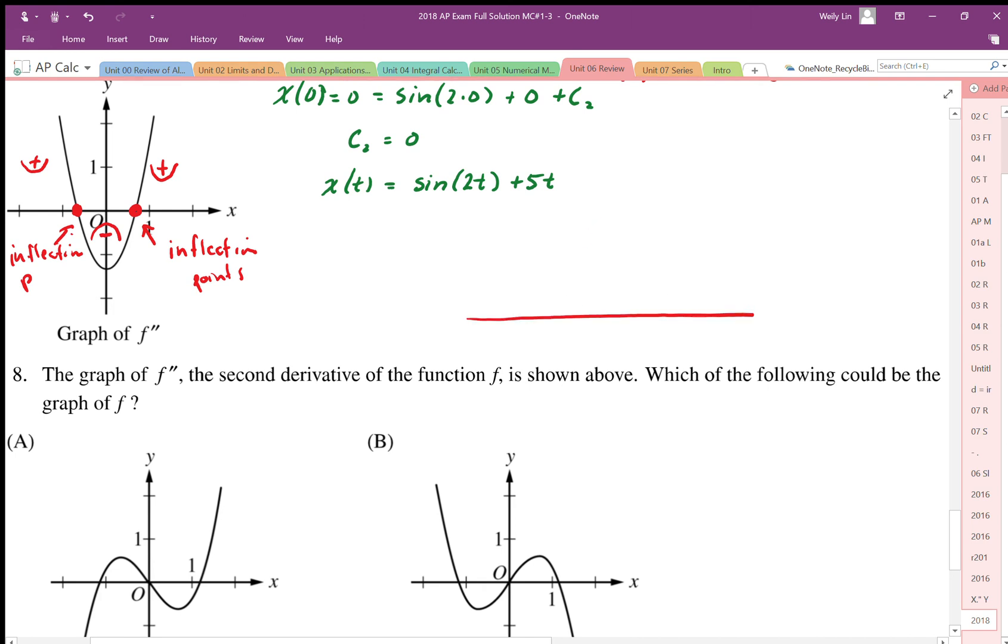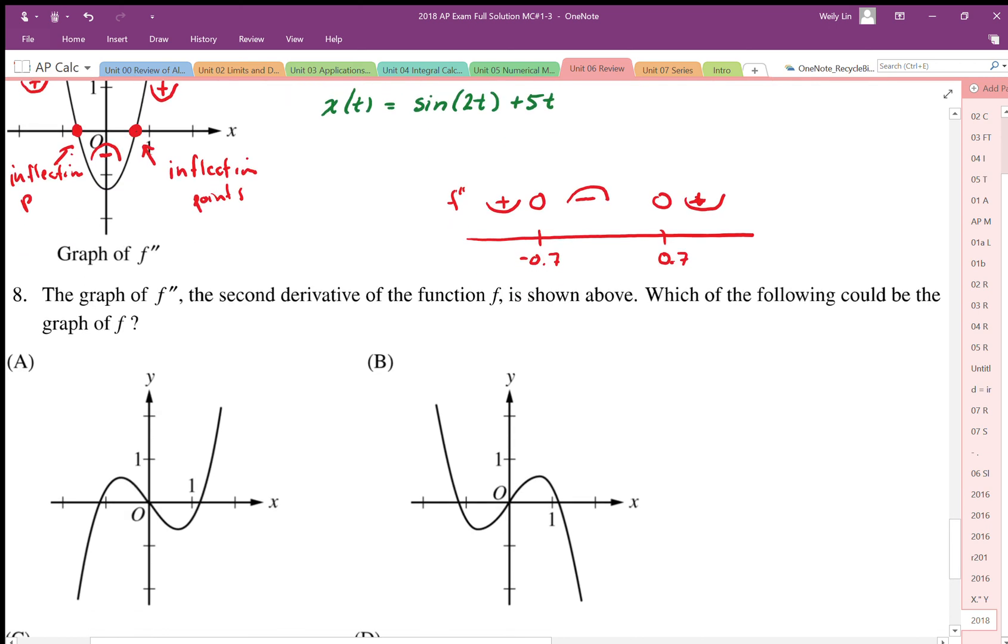And somewhere between negative 1 and 0, I'll say that's like negative point 7 or something like that. The value is actually not significant. We don't really need to know that value. That represents my zero concavity. So there's my f double prime. I have positive concavity here. I have an inflection here. And I have a positive concavity here. So I'm looking for a graph that's going to follow this shape. It has to have two inflection points here.